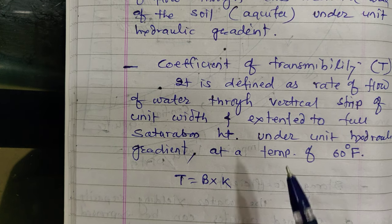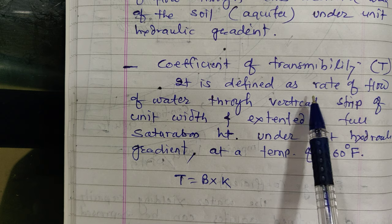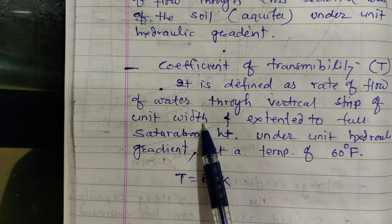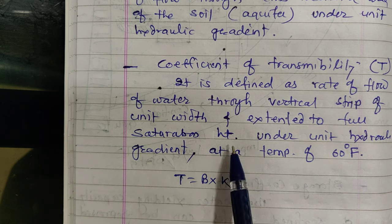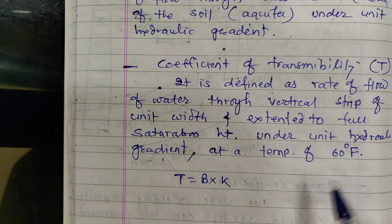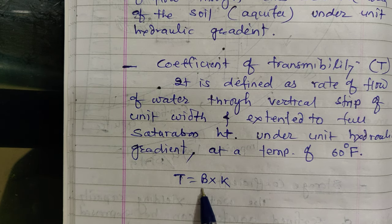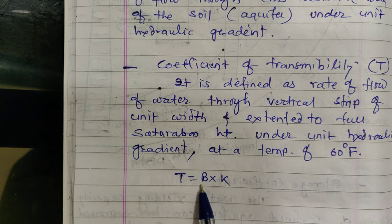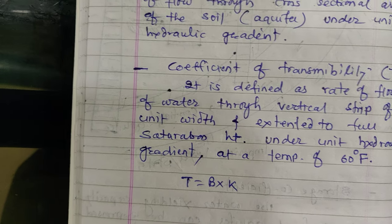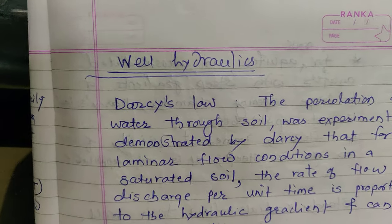Another definition is the coefficient of transmissibility, denoted by T. It is defined as the rate of flow of water through a vertical strip of unit width, extended to the full saturated height, under unit hydraulic gradient at a temperature of 60 degrees Fahrenheit. It is given by T = b × k, where b is the depth of the confined aquifer and k is permeability.